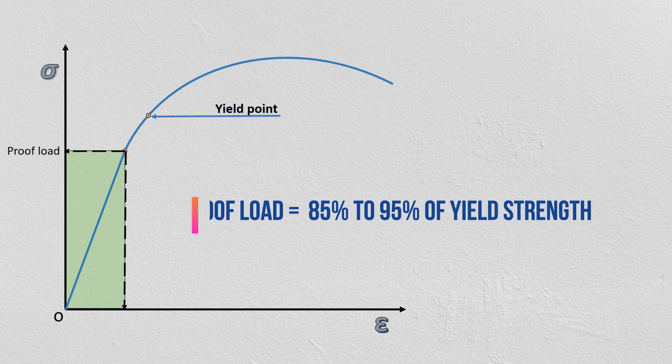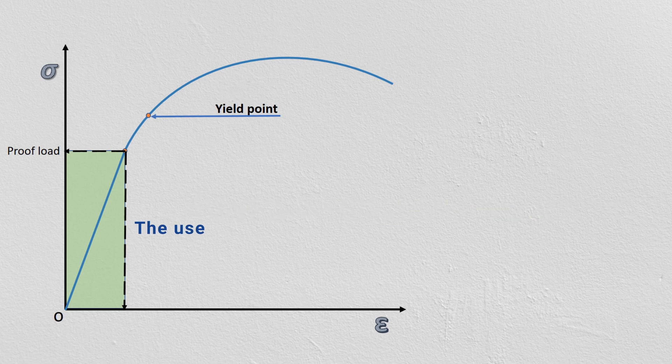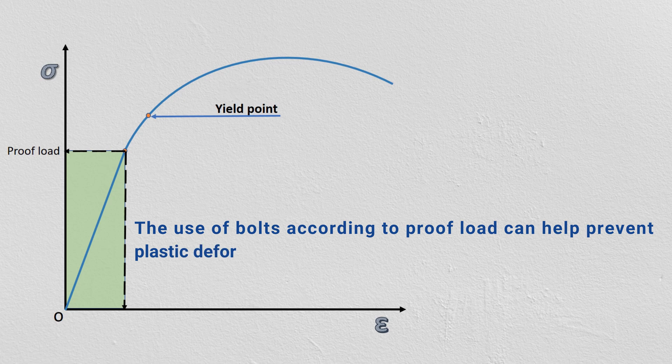Proof load is typically between 85 to 95% of the yield strength. Now it is clear that the use of bolts according to proof load can help prevent plastic deformation.